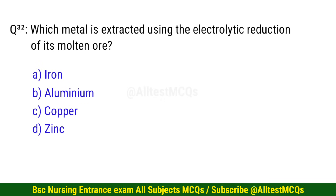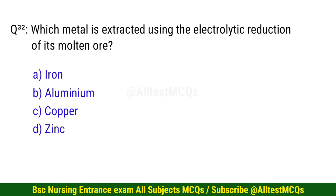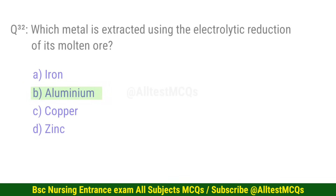Question number 32. Which metal is extracted using the electrolytic reduction of its molten ore? The correct option is D: Aluminium.